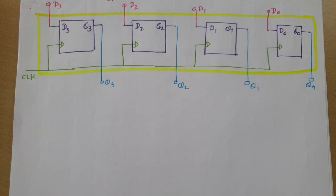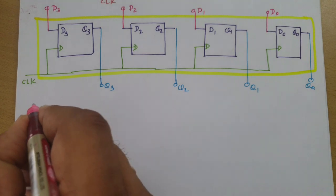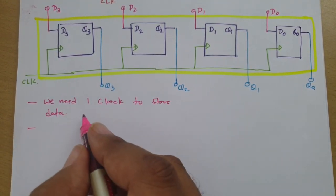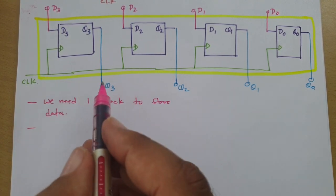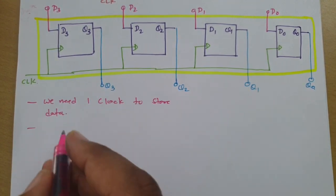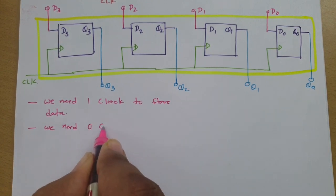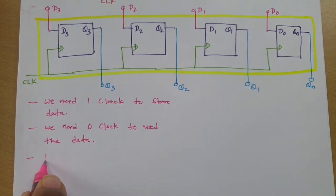With respect to entrance examinations, let us understand how we calculate the total number of clocks. We need just one clock to store the data. We need zero clocks to use the data, since after the clock it directly appears at the output side. So for total processing we need just one clock.